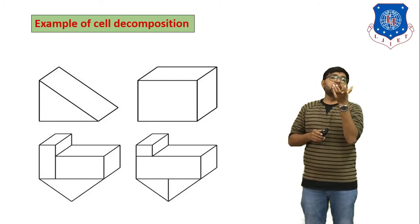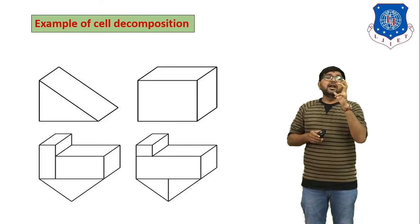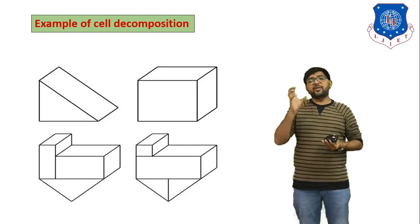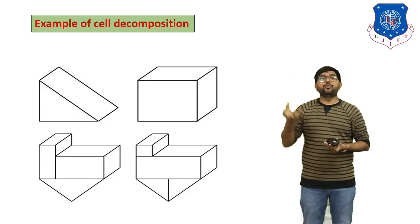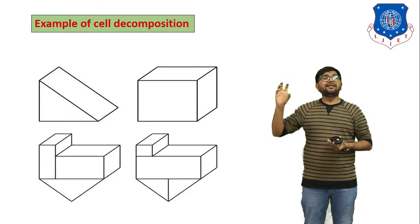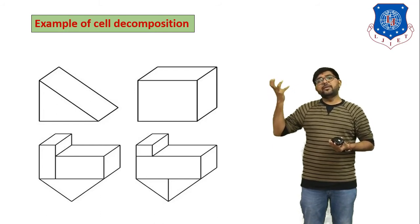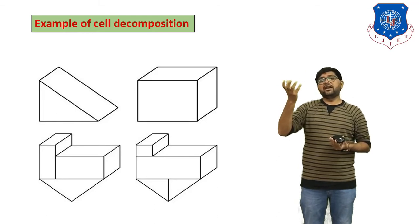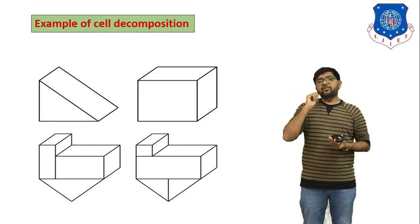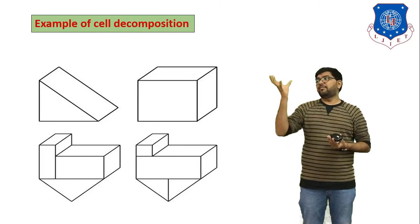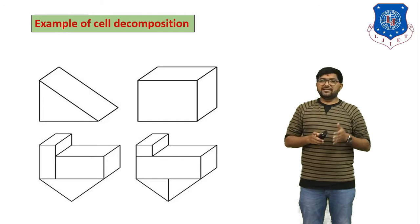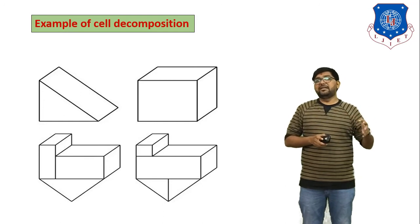In CSG method, some 3D objects are already available — like prism, ball, sphere. You just give some input data and the readymade 3D object is generated. For example, if you want to generate a sphere, you just give the radius. If you give radius 5, the software automatically generates a sphere with radius 5. All these things are available in the modeling software.